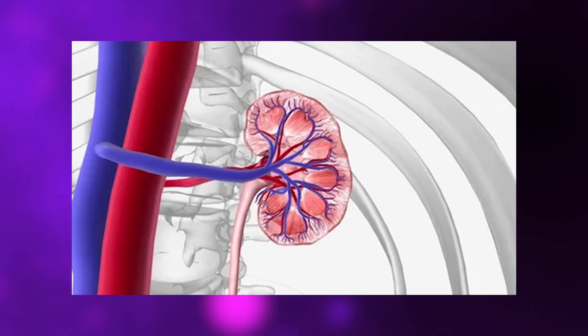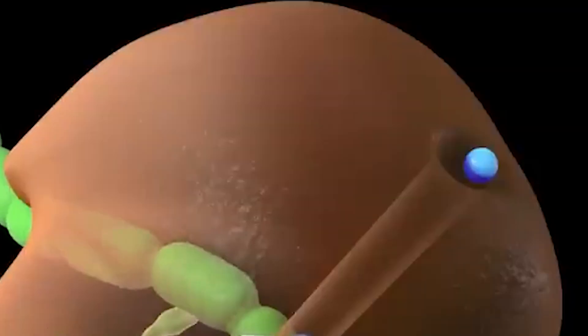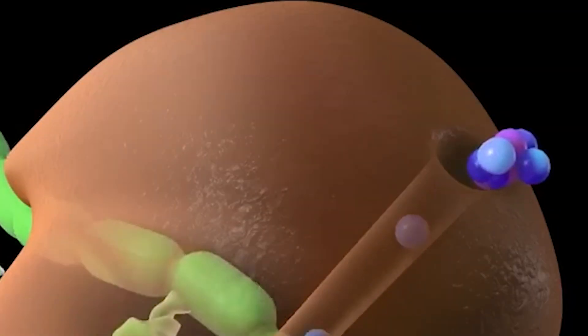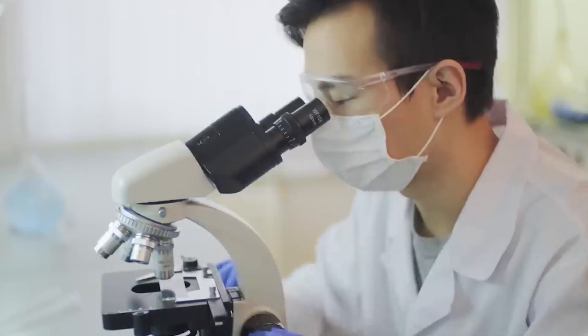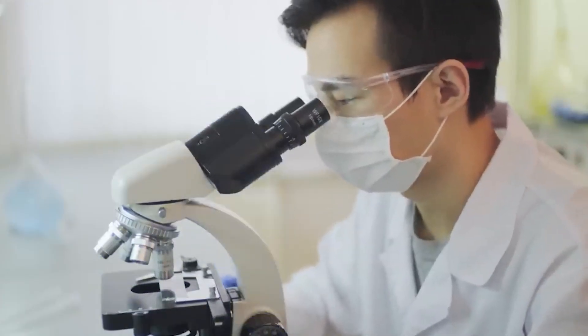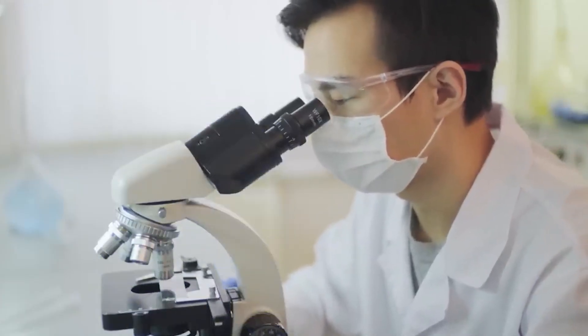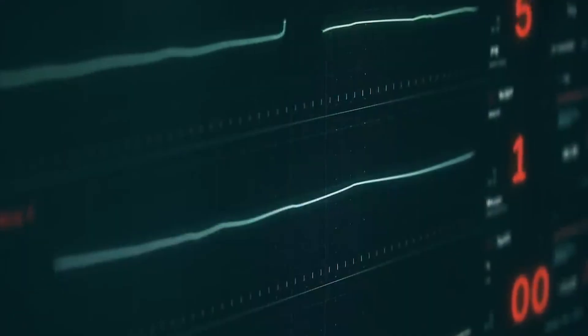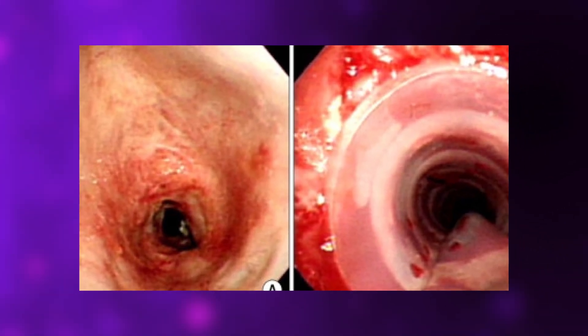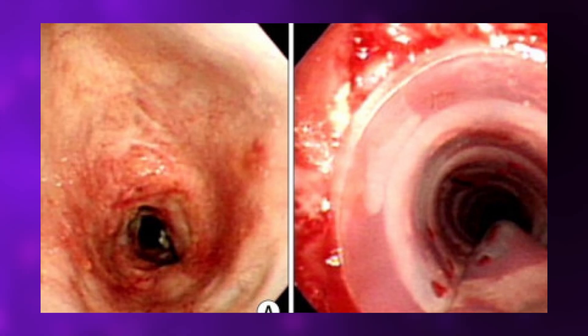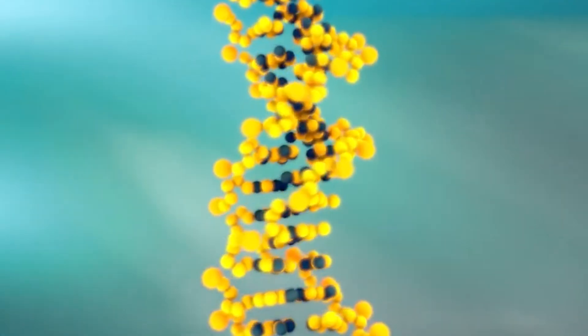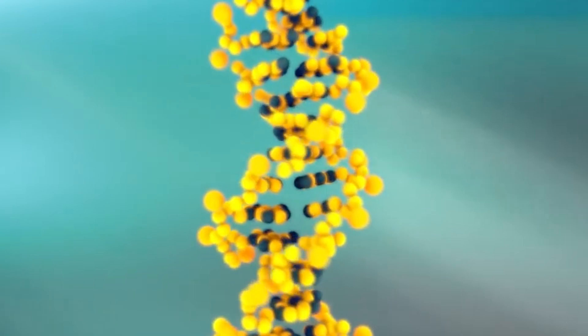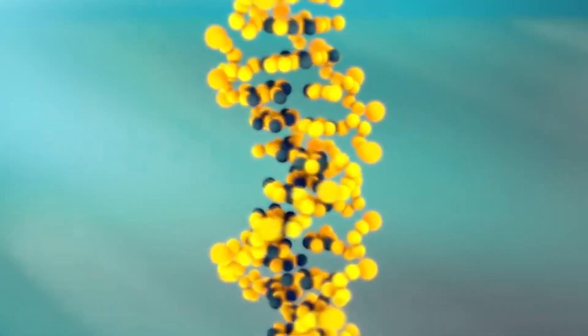While we can't yet grow a fully functioning human kidney from scratch, researchers have successfully created kidney organoids, miniature simplified kidneys that function well enough to test drugs and study disease. It's like having a practice kidney before building the real thing. And some successes have already moved from lab to patient. Bioengineered tracheas and skin grafts made from a patient's own cells have been successfully transplanted into human bodies. These aren't science experiments anymore. They're actual treatments saving actual lives.